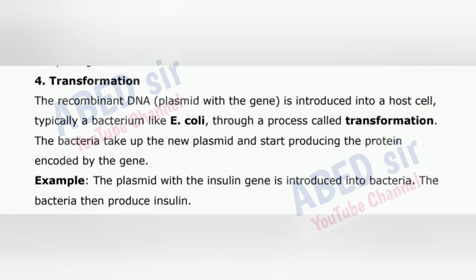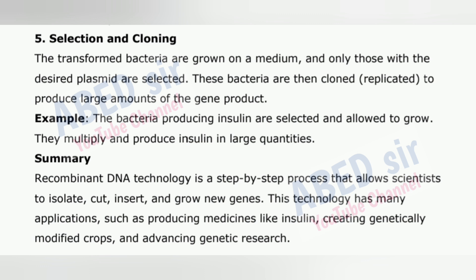4. Transformation – the recombinant DNA (plasmid with the gene) is introduced into a host cell, typically a bacterium like E. coli, through a process called transformation. The bacteria take up the new plasmid and start producing the protein encoded by the gene. For example, the plasmid with the insulin gene is introduced into bacteria, and the bacteria then produce insulin. 5. Selection and cloning – the transformed bacteria are grown on a medium, and only those with the desired plasmid are selected. These bacteria are then cloned (replicated) to produce large amounts of the gene product. For example, the bacteria producing insulin are selected and allowed to grow, multiplying and producing insulin in large quantities.